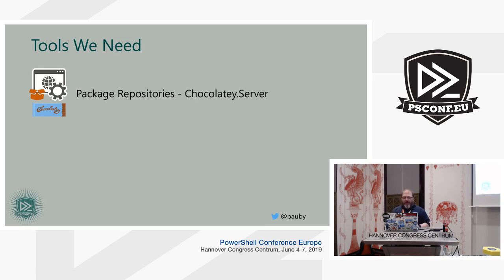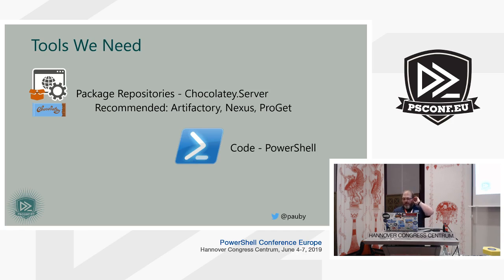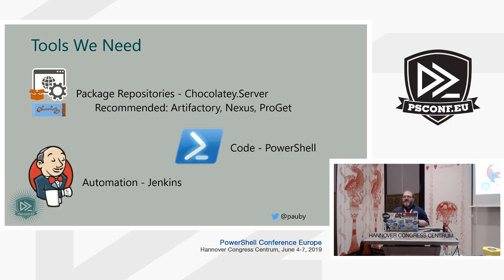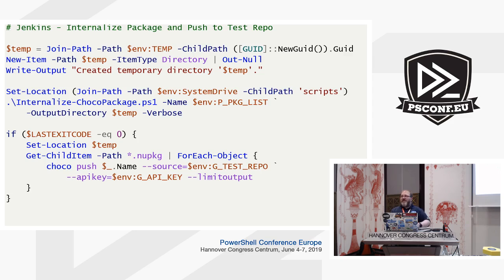To do this we need package repositories — in this case we're using Chocolatey Server, though we don't recommend it unless your requirements are very simple. For demo purposes it's ideal, but it's not called the Simple Server for nothing. We would actually recommend Artifactory, Nexus, or Proget. We're also going to use PowerShell to glue it all together, and Jenkins for our automation. We've got three Jenkins jobs set up — showing the code within Jenkins itself doesn't work well in this environment, so I'll run over them quickly. The code is effectively wrappers around some PowerShell scripts.